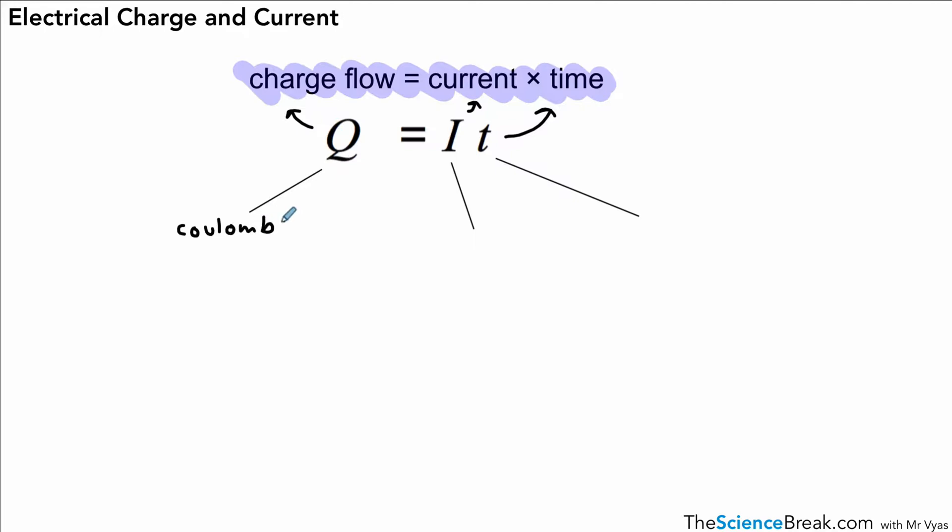And as we said, Q stands for coulombs. Or Q is measured in coulombs. Charge is measured in coulombs. Current is measured in amperes, but we're more than welcome to use the word amps. I'll be using amps throughout these videos. And it's shown by a capital letter A.